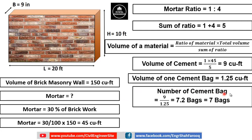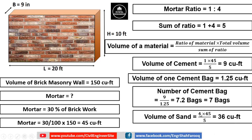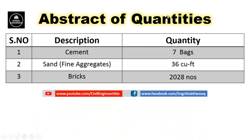Volume of sand or fine aggregate = (4 × 45) ÷ 5 = 36 cubic feet. To summarize, the total quantities required for this brick masonry wall are: cement = 7 bags, sand or fine aggregate = 36 cubic feet, and number of bricks = 2028 bricks.